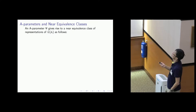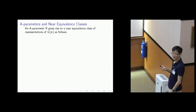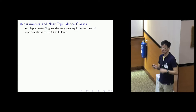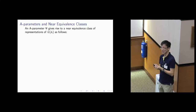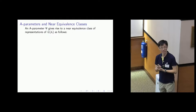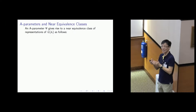So the question is, how are A parameters related to near equivalence classes? What I want to explain on this slide is that if you give me a global A parameter, it actually gives rise to a near equivalence class of representations. How do I tell you what a near equivalence class is? All I have to tell you is a set of unramified representations for almost all V. I would like to tell you an unramified representation pi_V. If I can specify that, it determines a near equivalence class, because that tells you what things in this near equivalence class have to look like at almost all places.